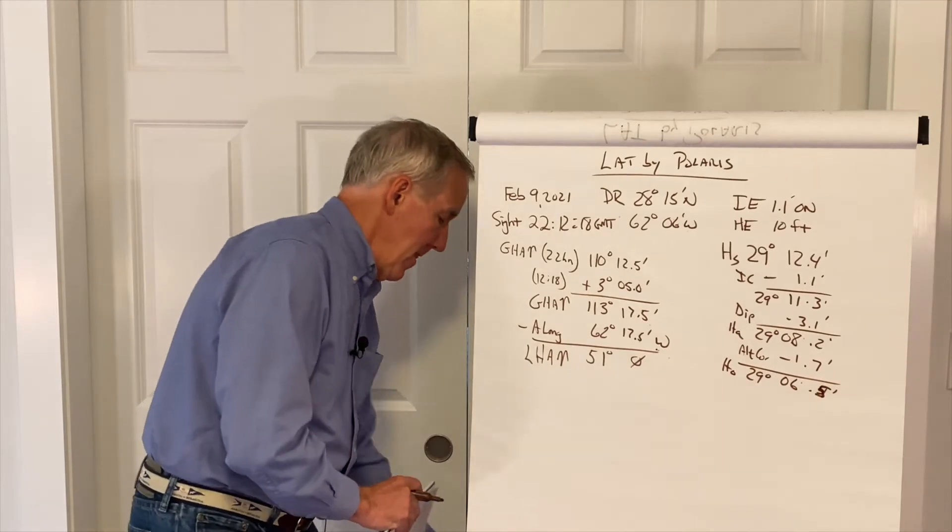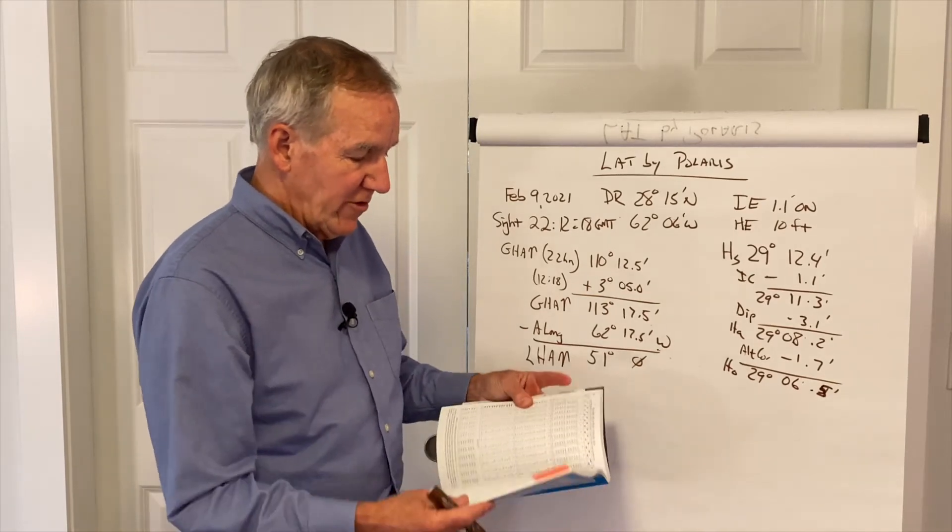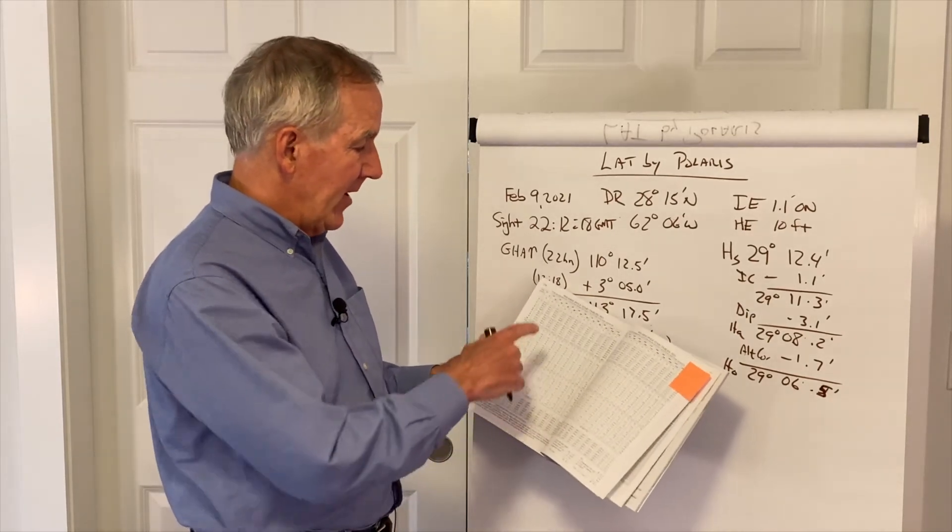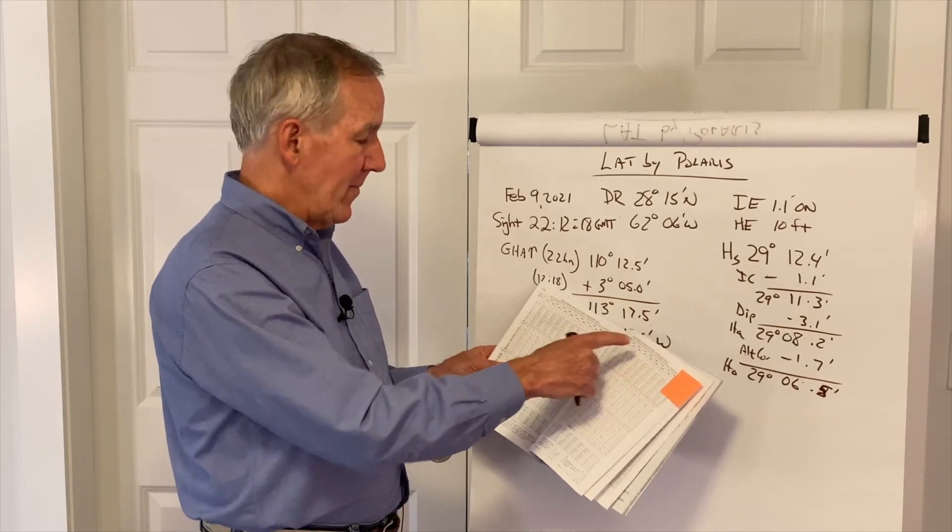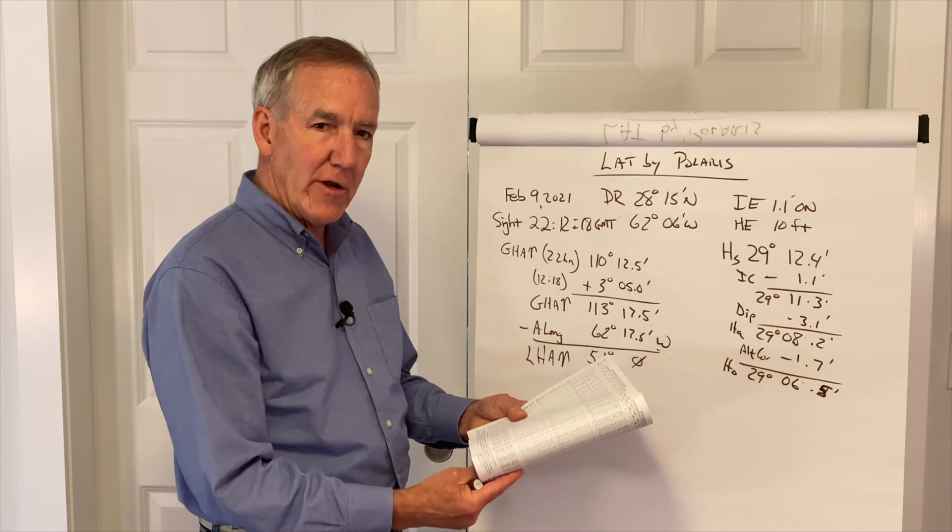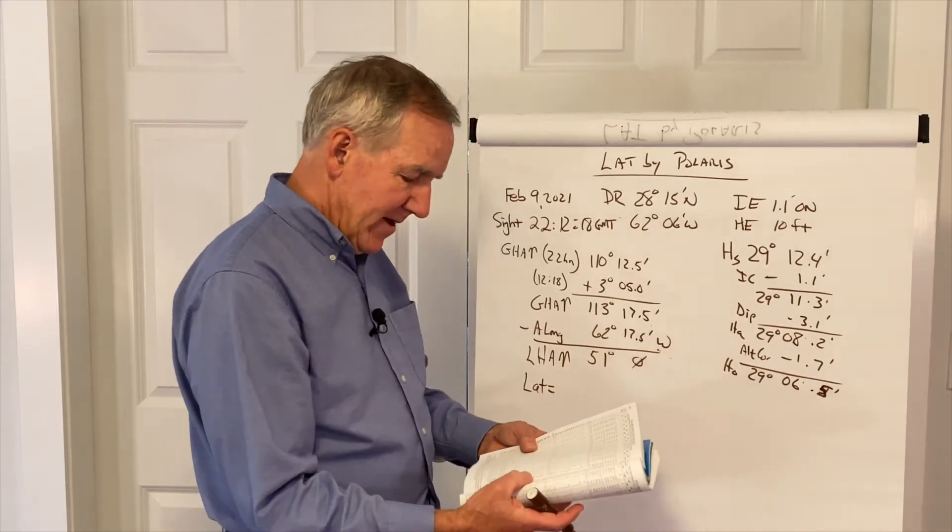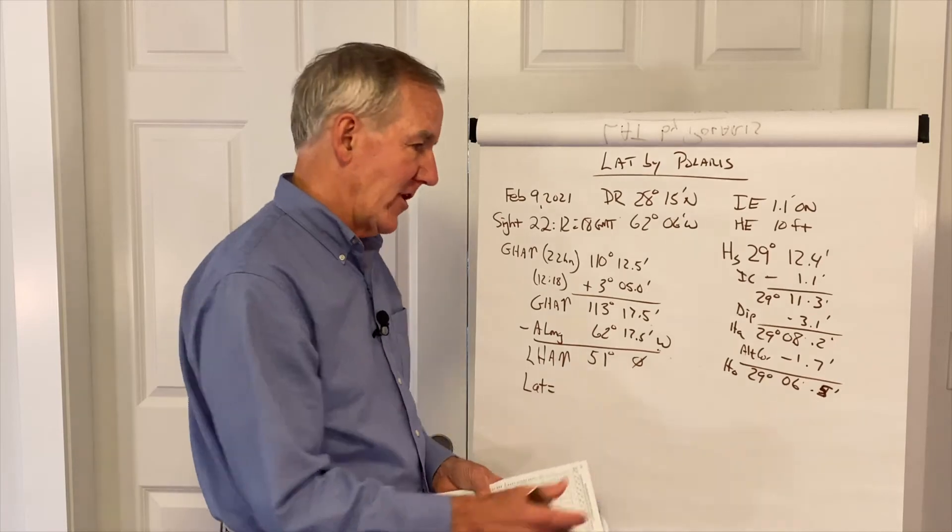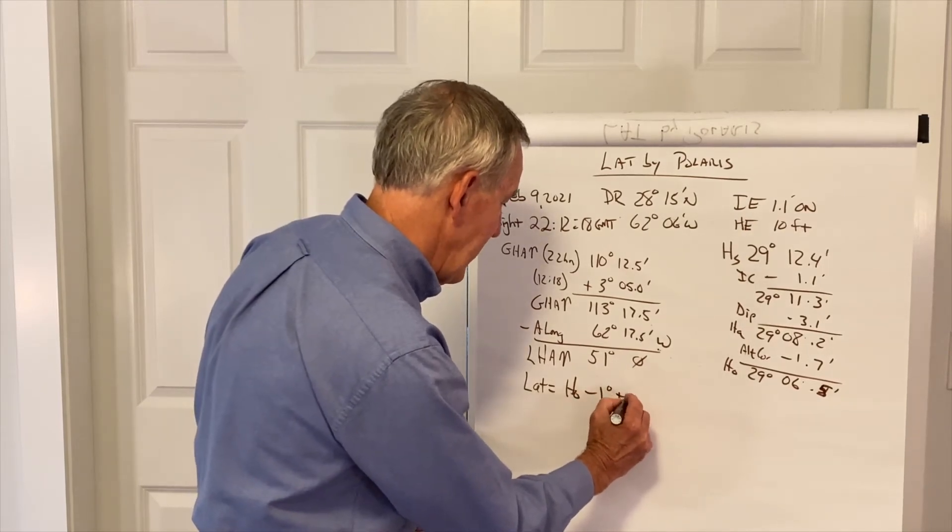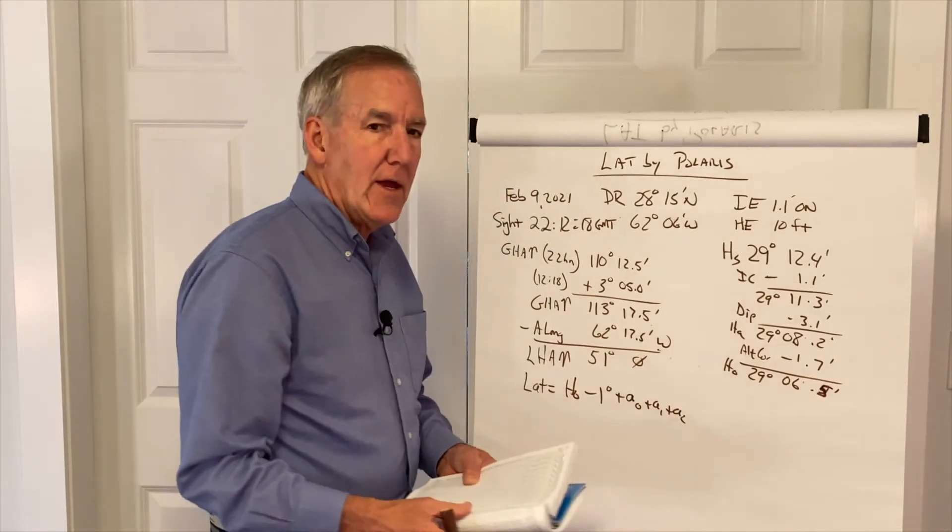Now, we go to the Polaris tables, which are just after the daily pages. The Polaris tables are set up with LHA of Aries across the top. And then there are three corrections we are going to add. And there is a formula at the bottom. It says, latitude equals apparent altitude corrected for refraction, which is nothing more than saying HO, minus 1 degree plus three corrections, a sub 0, a sub 1, a sub 2. That's all we have to do.